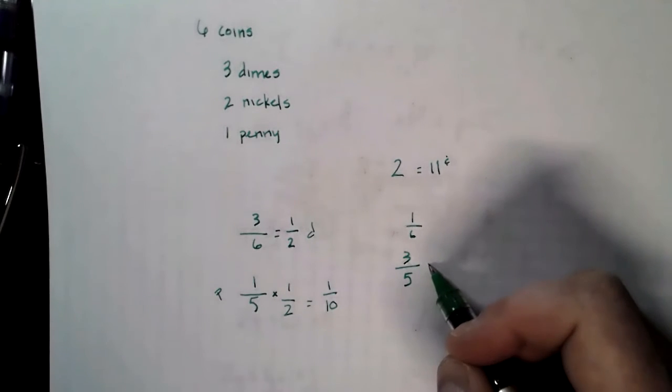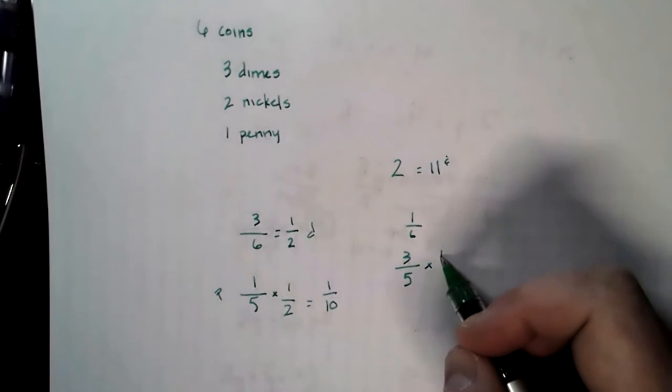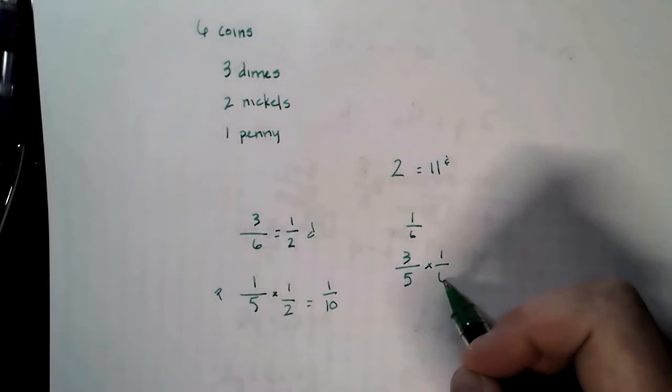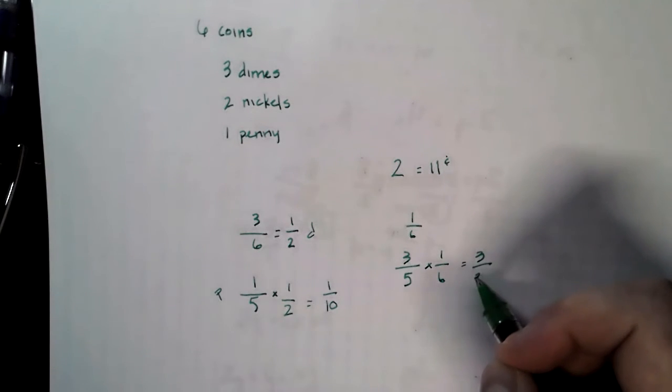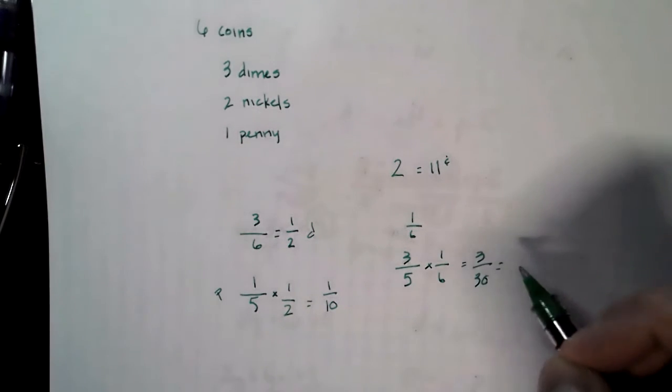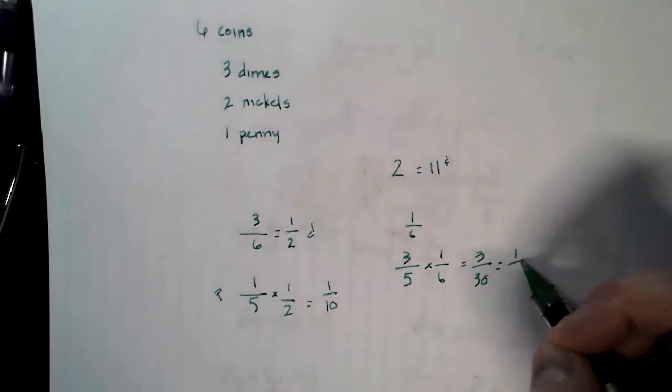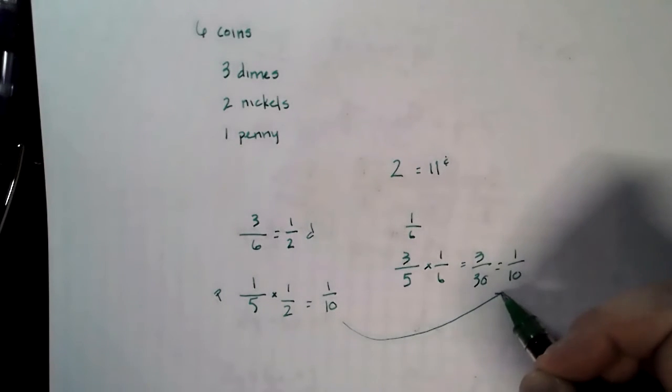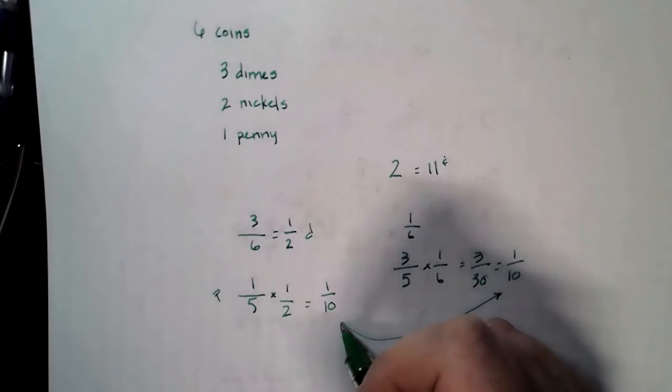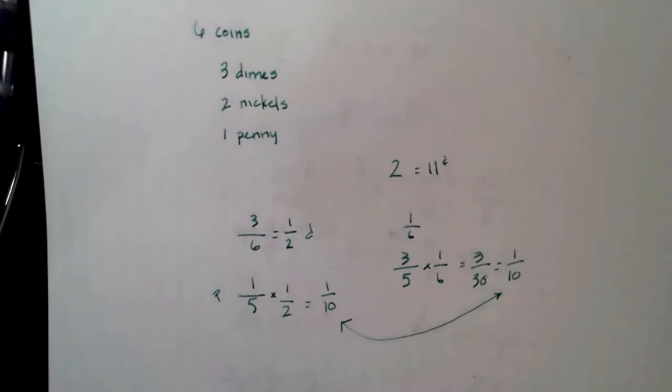That means we're going to do the same thing we did before. We're just going to multiply these two ratios and we get three over 30, which reduces to one over 10. No matter whether we pull the dime first or the penny first, we still have a one in 10 chance for either one.